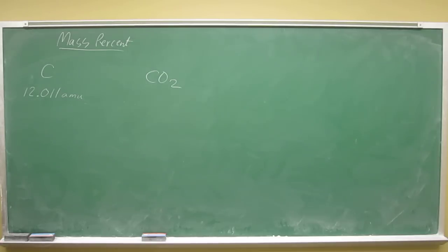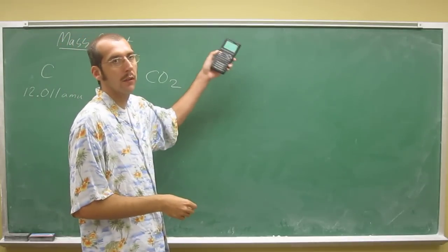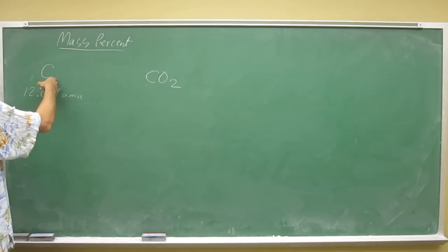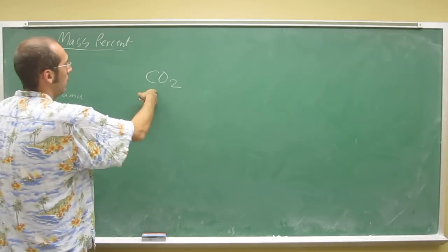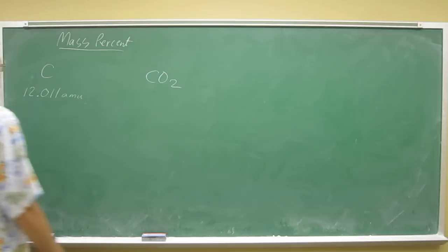To do a percentage, you do the part divided by the whole times 100%. This is the part you want, and this is the whole, but you don't know how much the whole thing weighs. You're trying to do mass percent, so you need to figure that out.